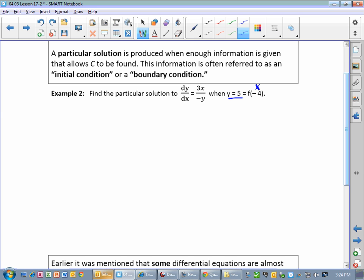And so in this case, it says find a particular solution to this differential equation, dy dx equals 3x over negative y, when y equals 5 equals f of negative 4. Now this is kind of a cryptic way of giving us definitely a y value, but right here we also have an x value. Kind of a unique way of writing it, but we see weird things like that sometimes. So you just need to be able to kind of roll with the punches. So we want to find this particular solution. So the first thing we do when we're asked to solve a differential equation is separate the variables. Always. So I'm going to rewrite the problem.